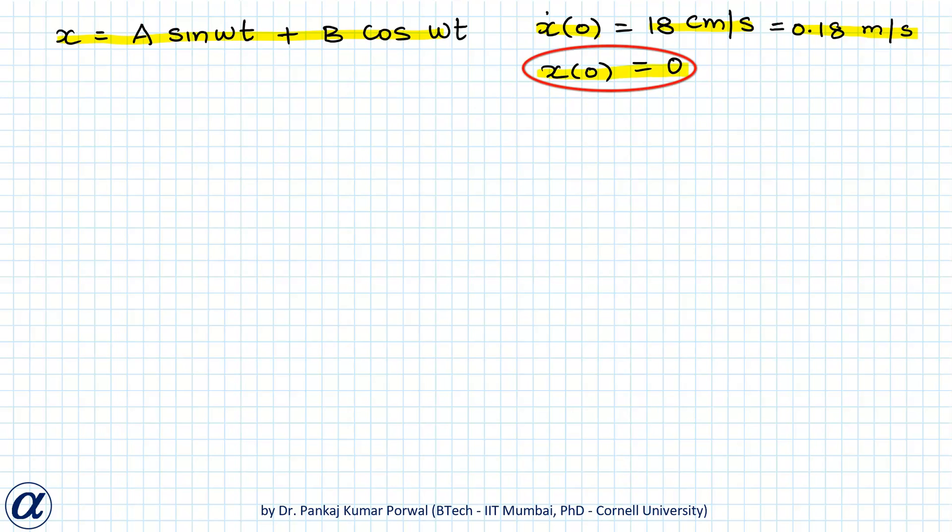So this implies 0 equals to A sin ω into 0 plus B cos ω into 0. We know sin 0 will be 0 so this term is 0 and cos 0 is 1 so this term will be just B.